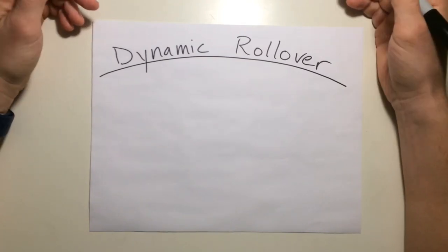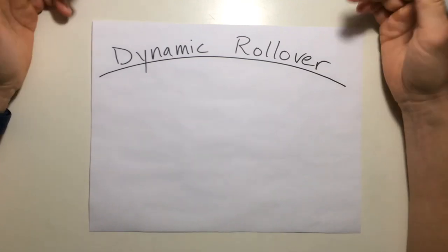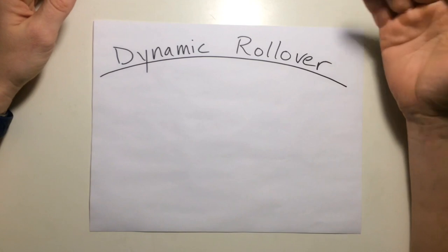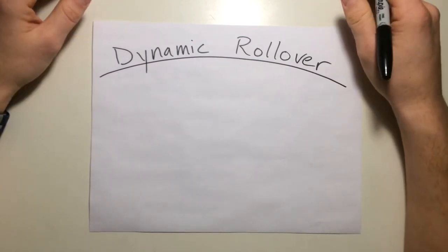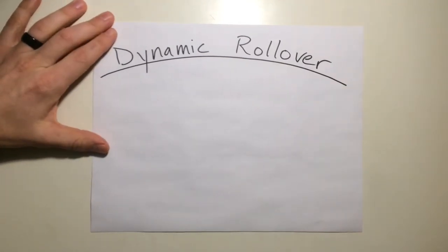Now static rollover is just that. It's the point at which an object will rollover from a static or stationary position. Pretty much means any object where the center of gravity is above the ground, something like a table or a chair or a car or a helicopter. Now it requires a pivot point and a critical angle. So let's take a look at what that means.